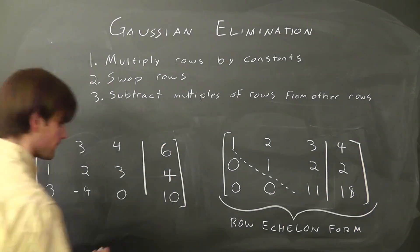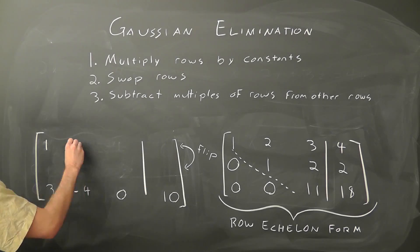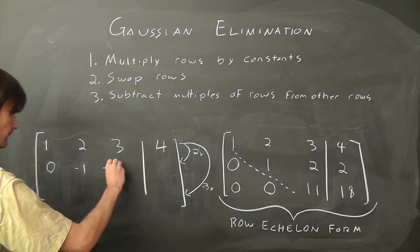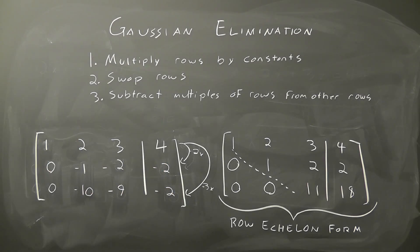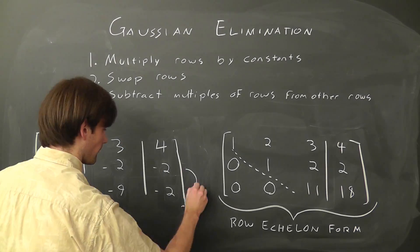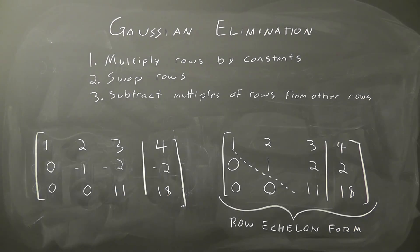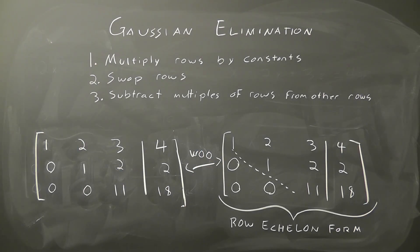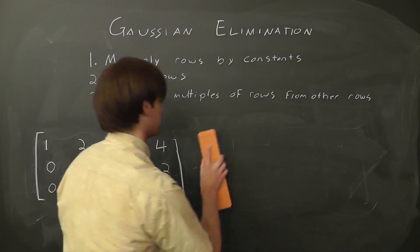So, in this case, we might start by maybe flipping the first two rows, and then subtracting two times the new first row from the second row, and three times that new first row from the third row. Now, we might subtract 10 times the second row from the third row, and then multiply that second row by negative one just to make sure everything's positive. Now, we have basically the matrix we were looking for. Oh, and sorry for the messy chalkboard.